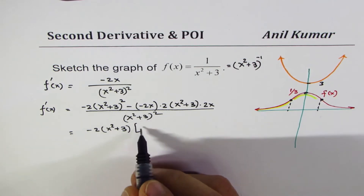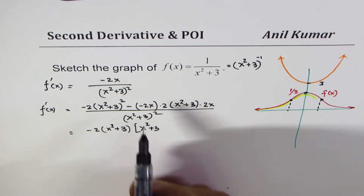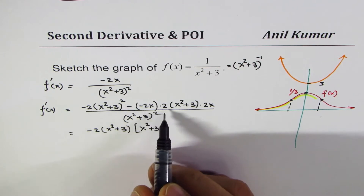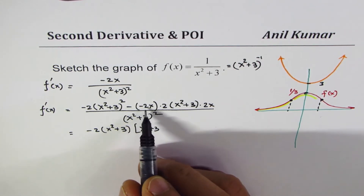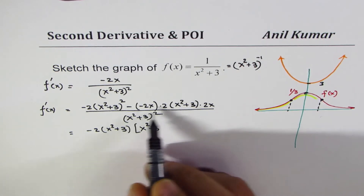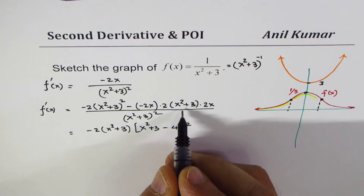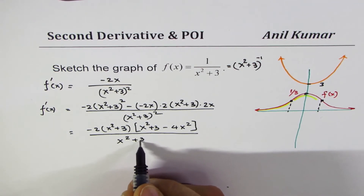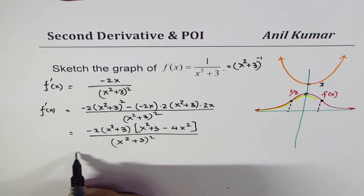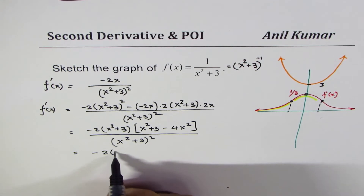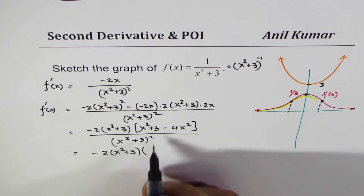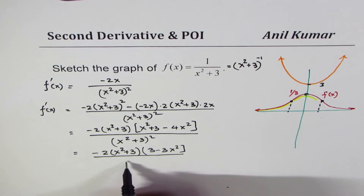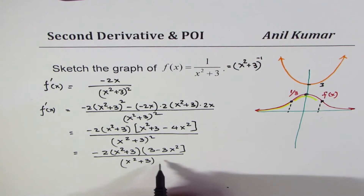From the numerator we can factor out −2(x² + 3). From the first term we're left with (x² + 3), and from the second term, after taking −2(x² + 3) common, we're left with −4x². The denominator is (x² + 3)⁴, which simplifies. We get −2(x² + 3)(3 − 3x²) over (x² + 3)⁴.